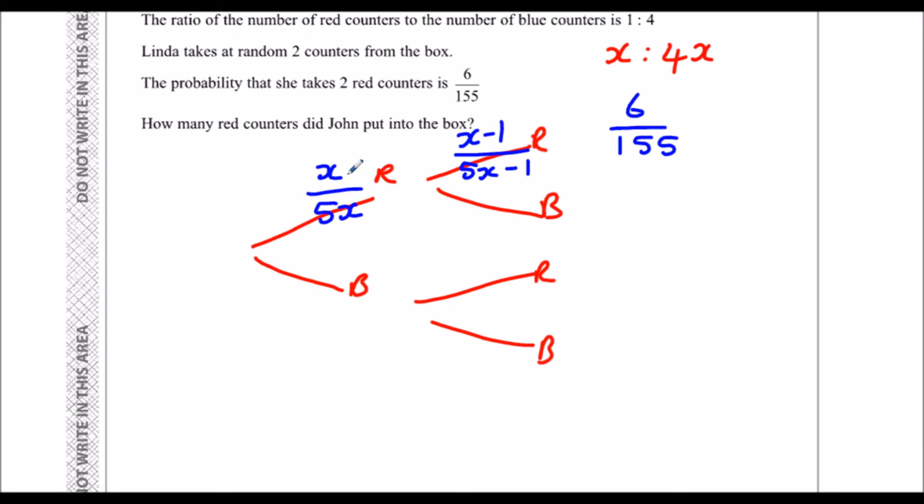So this one times this one equals this one. I'm going to simplify this to 1 fifth before I do my working out. So x over 5x is the same as 1 fifth. I'll write 1 fifth times x minus 1 over 5x minus 1 equals 6 over 155.